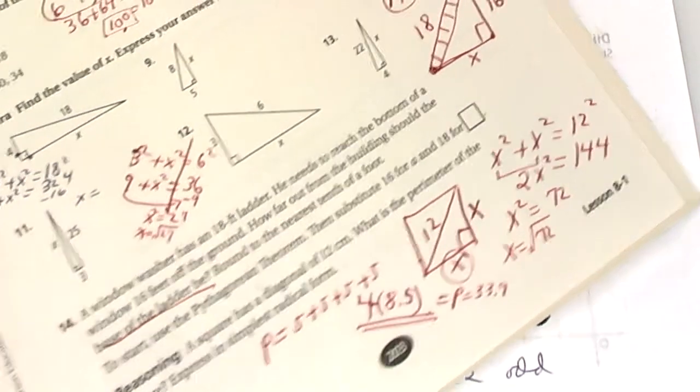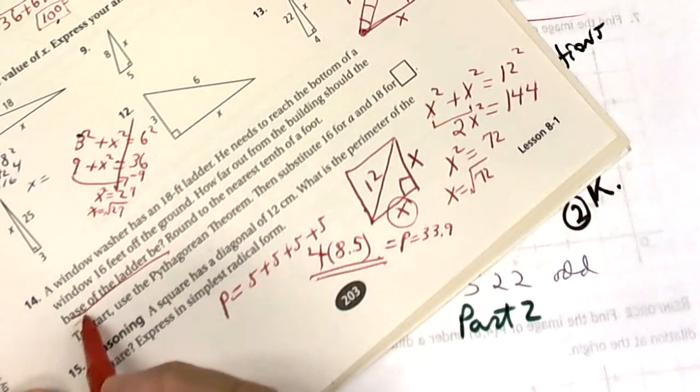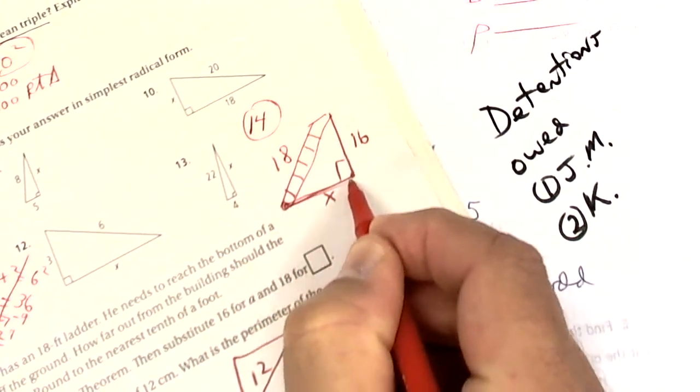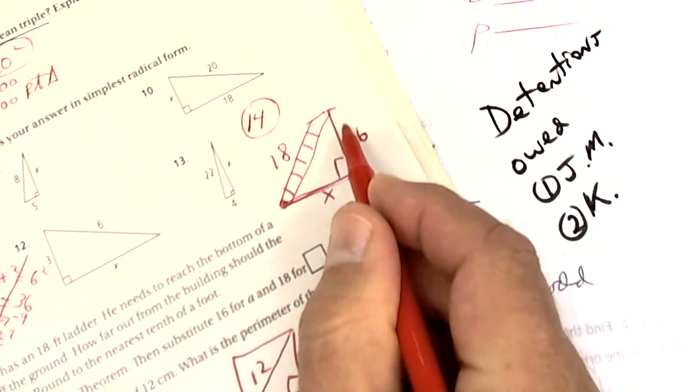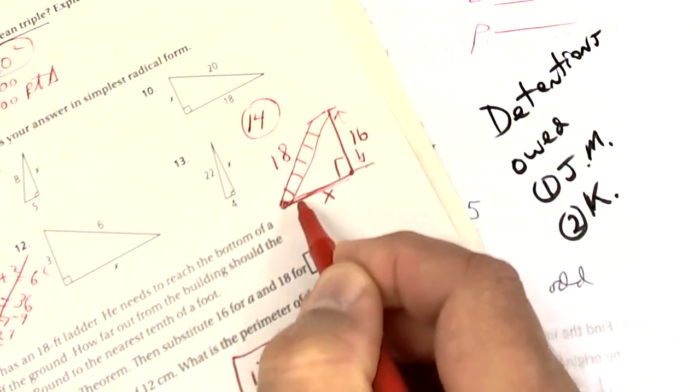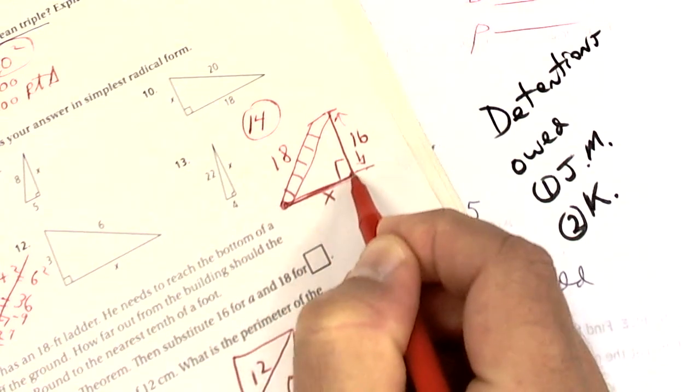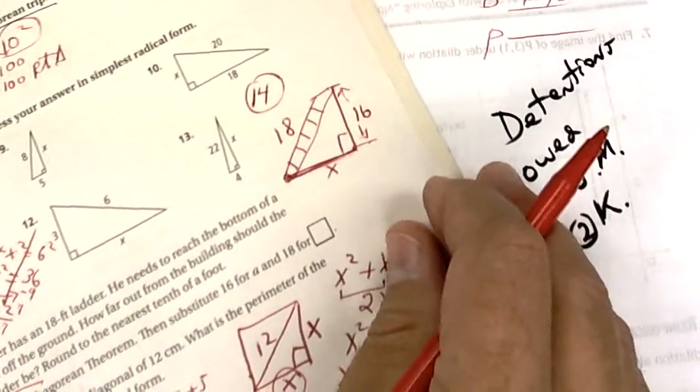the word base right here, that means the bottom. So if you look at the diagram, here's your ladder, here's the wall. The window's way up here, 16 feet. They want to know how far from the base of the ladder from the wall—that's this piece. So you're going to set it up with Pythagorean's theorem. So you're going